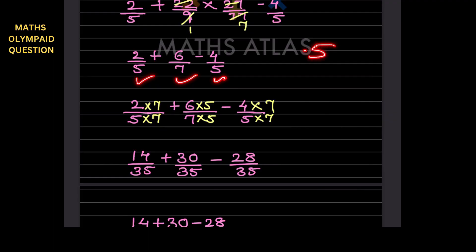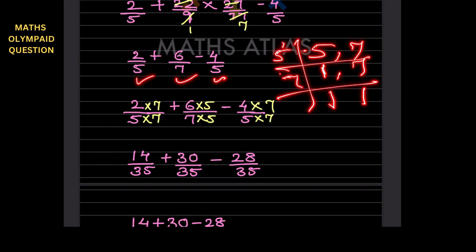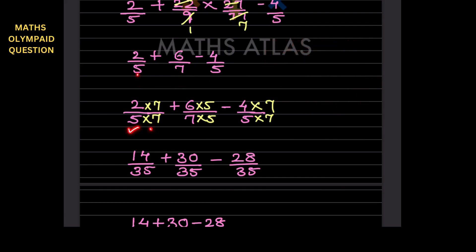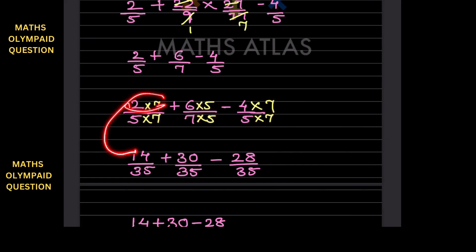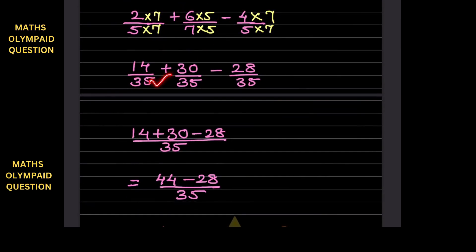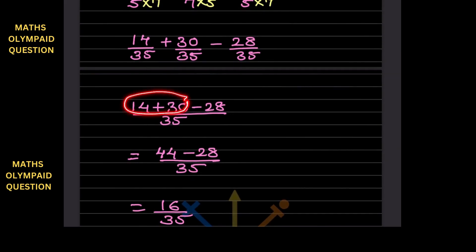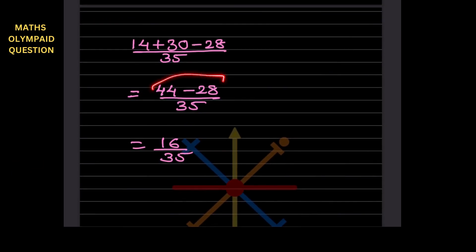To convert each fraction to denominator 35: multiply the fraction with denominator 5 by 7/7, and the fraction with denominator 7 by 5/5. This gives us 14/35, 30/35, and 28/35. Now all denominators are the same, so we write the denominator once and combine the numerators: 14 plus 30 minus 28. First, 14 plus 30 is 44; then 44 minus 28 gives the final answer. Follow every step carefully — missing even one step will give you the wrong answer.